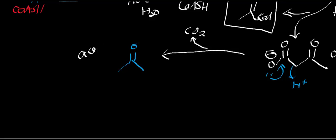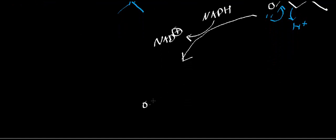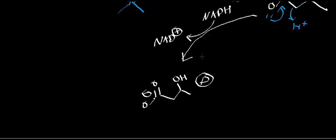Acetone — or 2-propanone in IUPAC nomenclature. Acetoacetate also has another fate: it can be reduced. In this case we have to use an NADH, which produces NAD+, and we end up generating beta-hydroxybutyrate — specifically the D-isomer of beta-hydroxybutyrate. The chiral center is the one bearing the hydroxyl group and the methyl group.